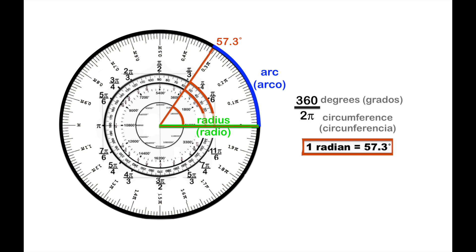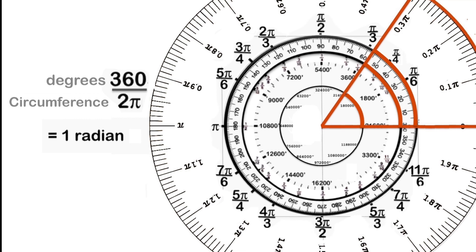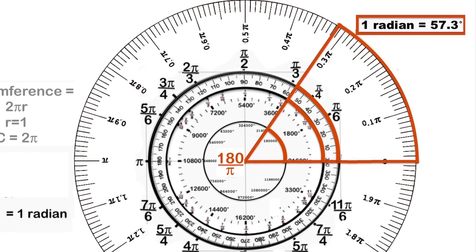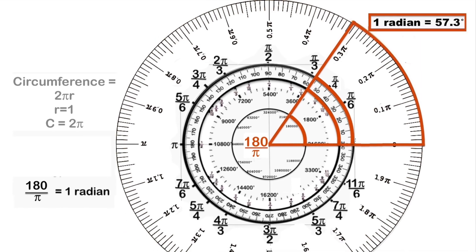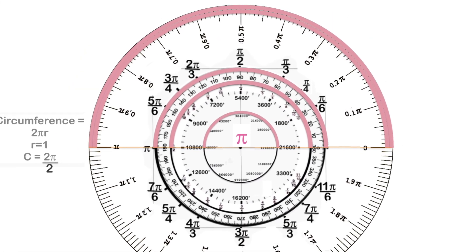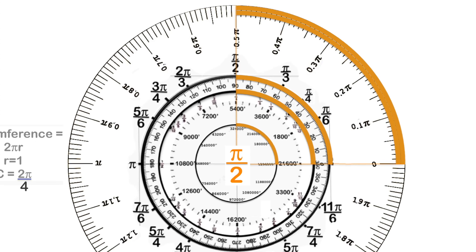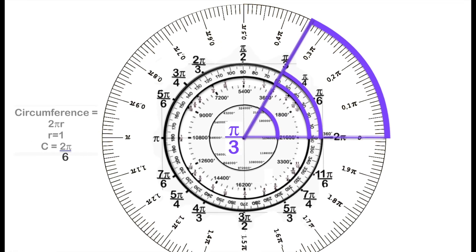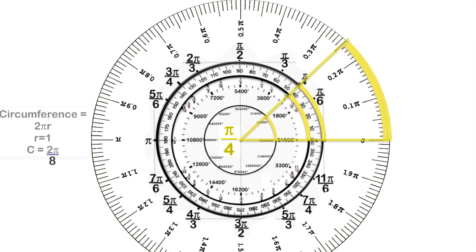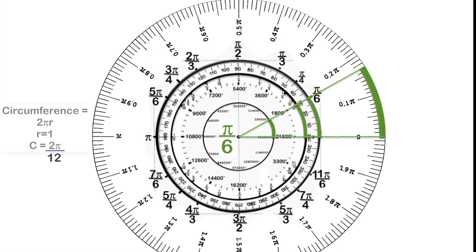Let's calculate radians. One radian is the ratio between a rotation in degrees and the circumference of a unit circle, equal to 57.3 degrees, or 180 over pi. One revolution equals 2-pi radians. Dividing the circumference by 2 gives pi; by 4 gives pi over 2; by 6 gives pi over 3; by 8 gives pi over 4; and by 12 gives pi over 6.